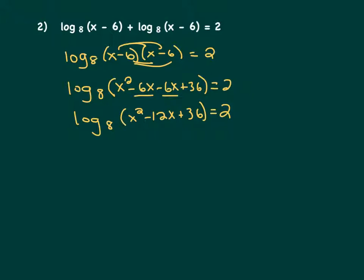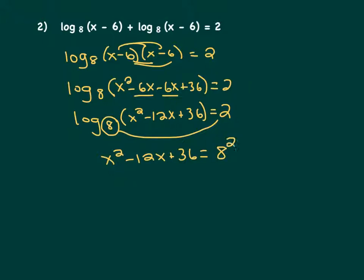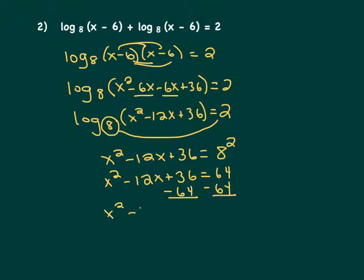If you have a log on one side of the equation and not the other, what we want to do to get rid of the word log is we circle the base and run the race. That leaves us with x squared minus 12x plus 36, and we move the 8 over to the other side as the base on the 2, giving us 8 squared, which equals 64. To finish solving, since we have an x squared, we need to move everything to one side so we can factor, make a t-chart, and solve.